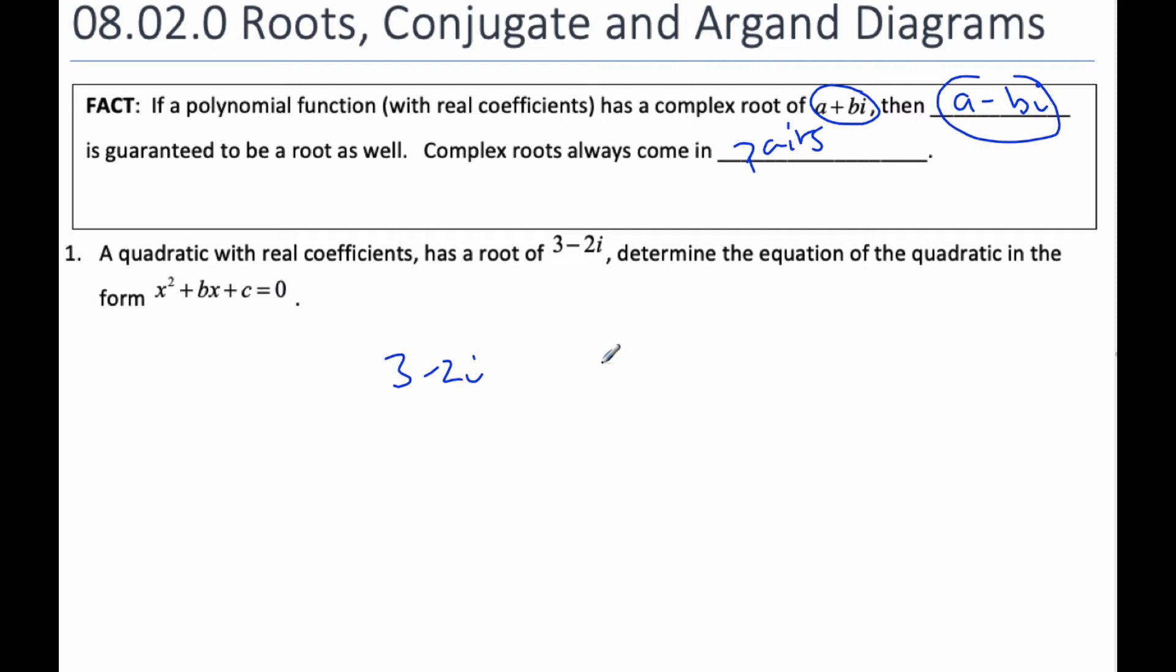Well, if 3 minus 2i is a root, then I also know that 3 plus 2i is the other root. I know if this is a root, it's also the x-intercept, so if I go x minus this number, that's one of my factors, and x minus this number here, that's another of my factors, but I have to expand it out.